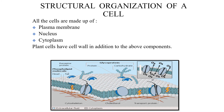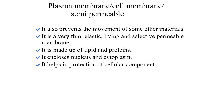Here you can see the structure of a plasma membrane. The plasma membrane is made up of lipid and protein. It is also called the cell membrane, semi-permeable membrane, or selectively permeable membrane. It is a very thin, elastic, living, and selectively permeable membrane that controls movement from outside to inside and inside to outside the cell. It helps in the protection of cellular components.